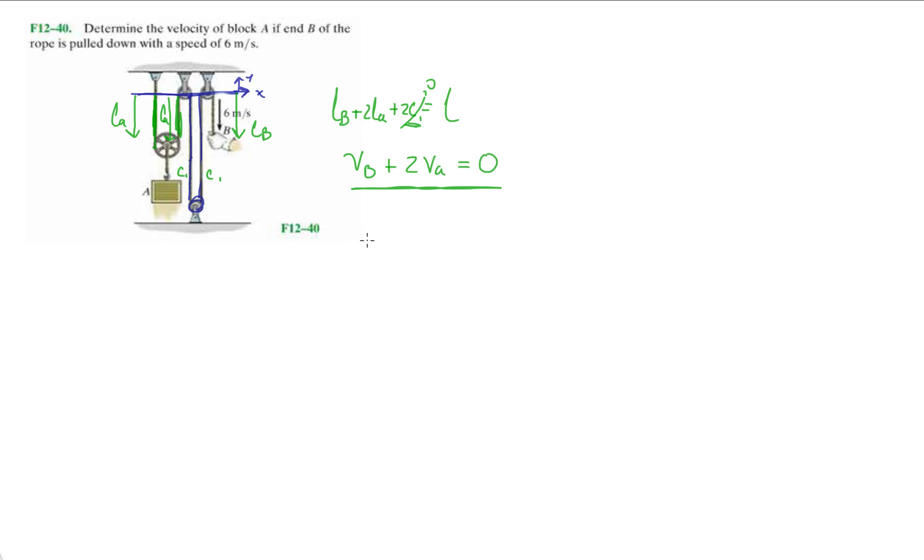So now we have VB is six, and it's going down. So we're going to say that this is minus six plus two VA equals zero. So this is two VA equals six. And then we get our final answer, which is box A is moving up with a speed of three meters per second.